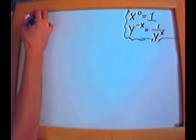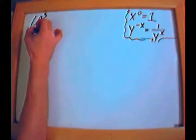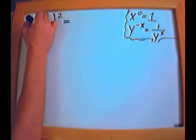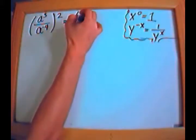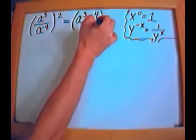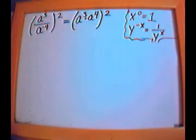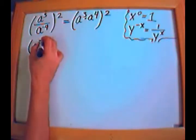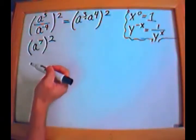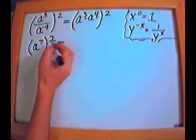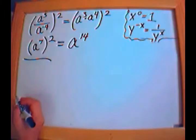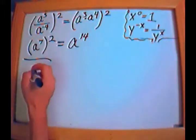Next: (a to the third over a to the negative 4) raised to the second power. I'll move the a to the negative 4 upstairs, making it positive, giving a to the third times a to the fourth, all raised to the second power. Simplifying inside: 3 plus 4 is 7, so a to the 7 raised to the second power. Multiplying exponents: 2 times 7 is 14. The answer is a to the 14th.